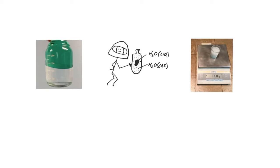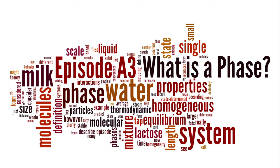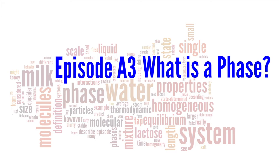As we've seen, this has a significant impact on how we describe the system, including the type and number of independent intensive properties. This brings us to the topic of this episode, which is to explore in a bit more depth what exactly a phase is and how we go about deciding how many phases we have in our system.